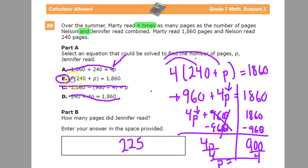So this is our equation in the end of all things. Move this out. This is the equation we're going to use, 4 times 240 plus p equals 1860. And when I work that out, I can see that Jennifer has read 225.